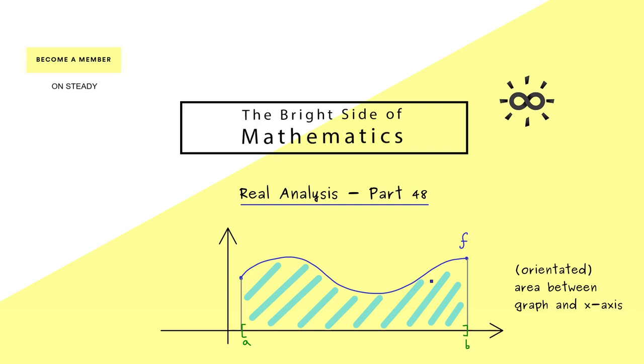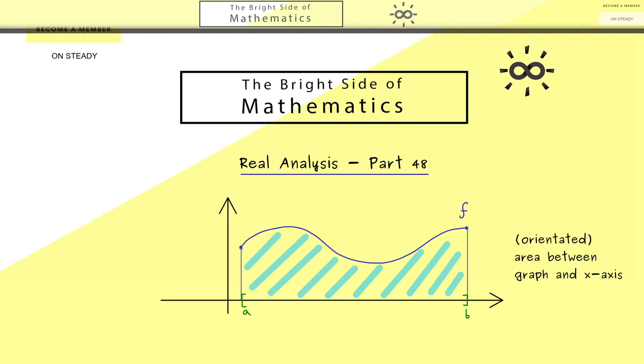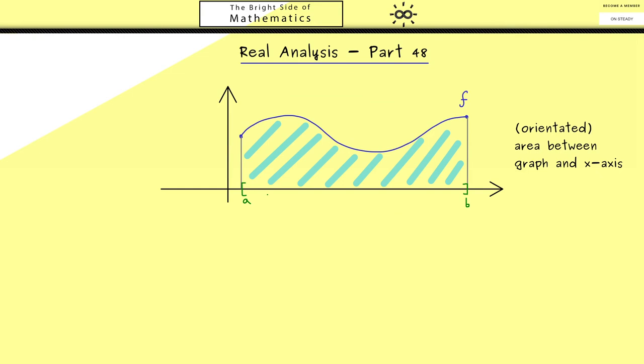But then the question is, how can we calculate this area? I can already tell you the overall idea is that we approximate it with rectangles. Indeed, the procedure for the Riemann integral is that one chooses points on the x-axis and then draws rectangles above them.